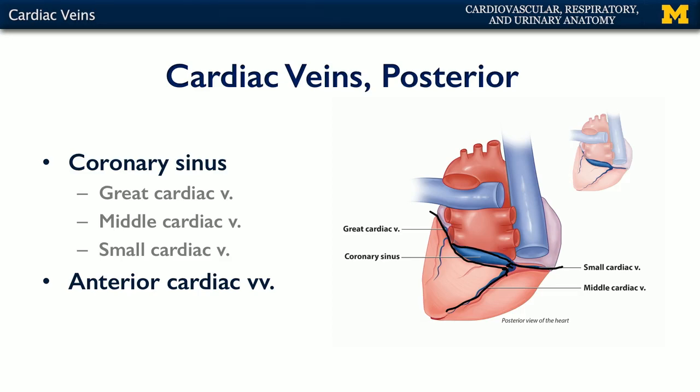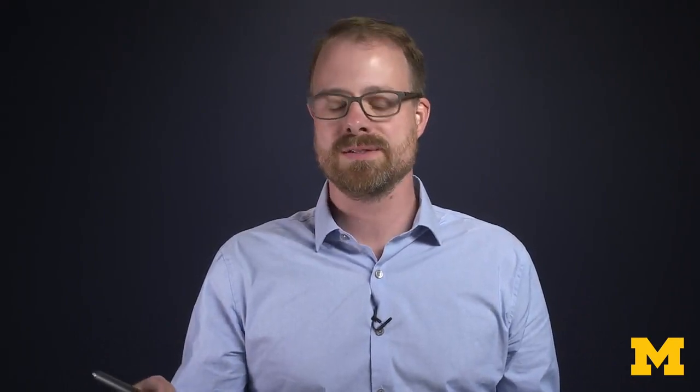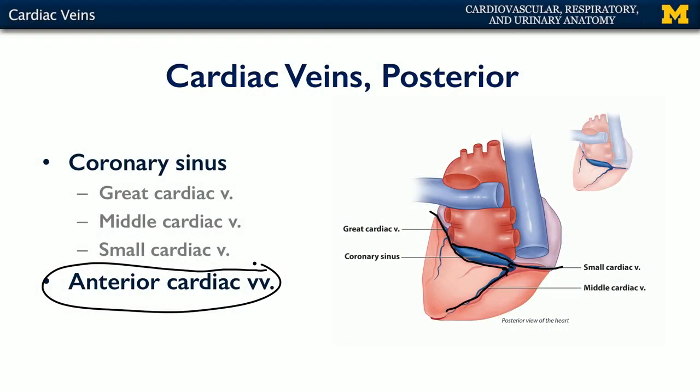All three of these are going to feed into the coronary sinus, which then feeds directly into the right atrium. In addition, there are also anterior cardiac veins, and these anterior cardiac veins are notable because they drain directly into the right atrium and bypass the coronary sinus.